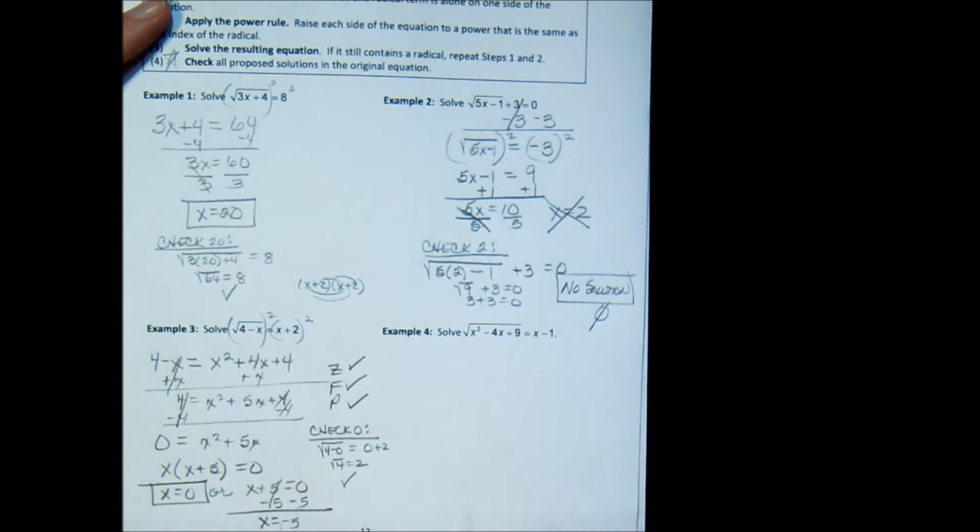Now let's check the other one. I'm going to check negative 5, being very careful with signs. Is the square root of 4 minus negative 5 equal to negative 5 plus 2? Is the principal root of 9 equal to negative 3? No, it's not. This doesn't work, so I discard that solution. And x equals 0 is the only solution that works.